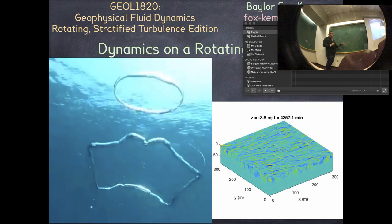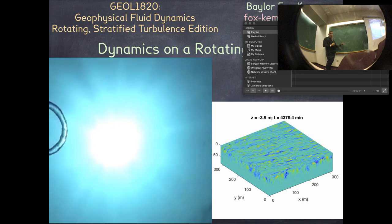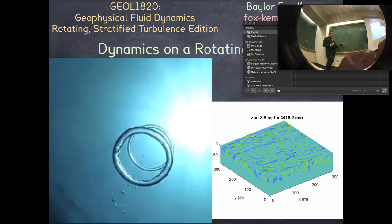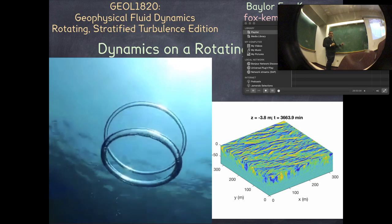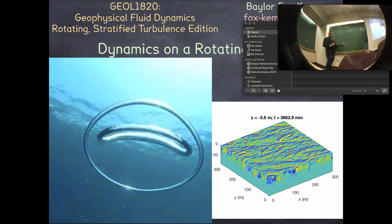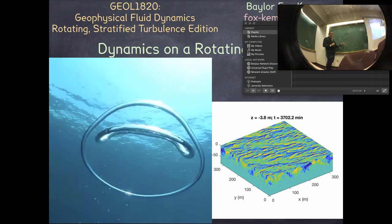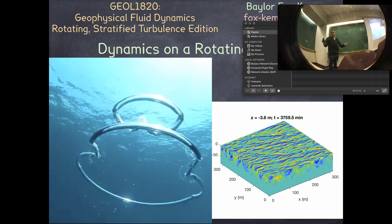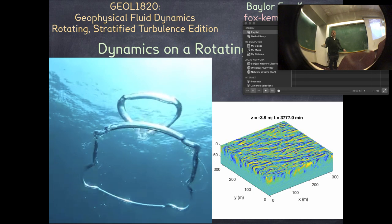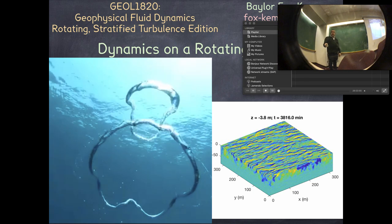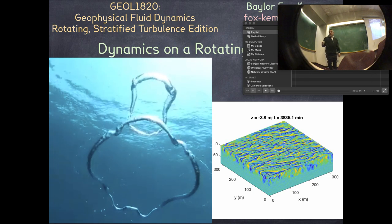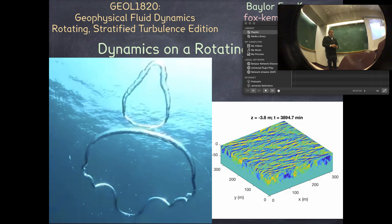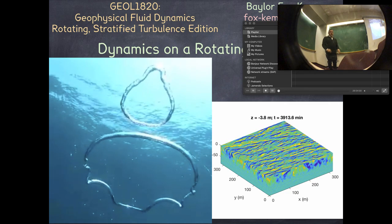What kind of waves are in the shallow water equations? Kelvin waves — we've talked about those a little. There are also Rossby waves, which we haven't talked about much. And then there are gravity waves. Gravity waves are the only ones we have actually talked about the speed of.